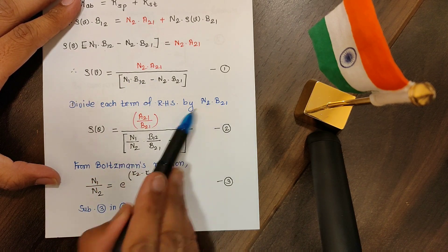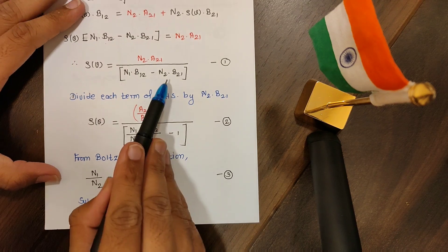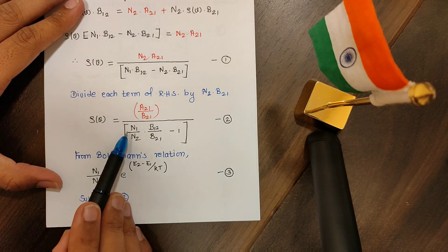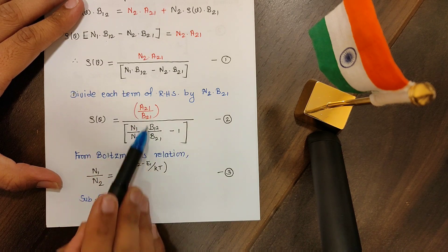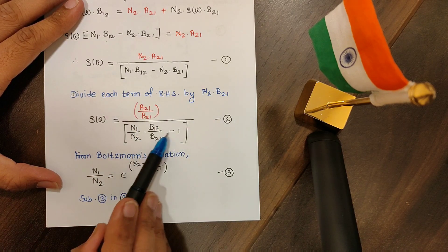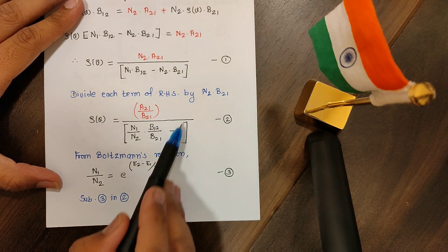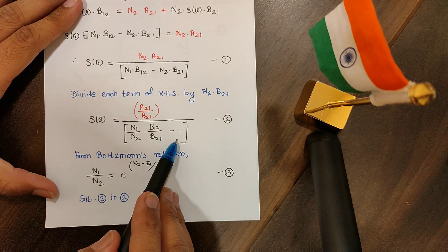So in the numerator, if I divide by n2 into b21, n2 n2 gets cancelled, we are left with a21 divided by b21. If I divide this term by n2 b21, so you are getting n1 over n2, b12 over b21, minus n2 into b21 divided by n2 into b21 will give you the result as one.